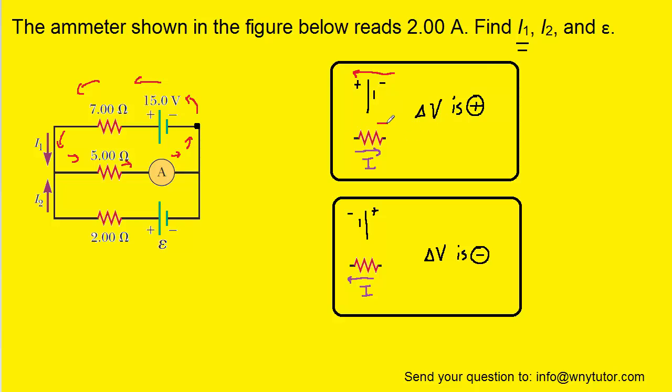If you are moving against the current, and we've shown the current flowing to the right in this picture, if you're moving against the current, your ΔV is also positive.